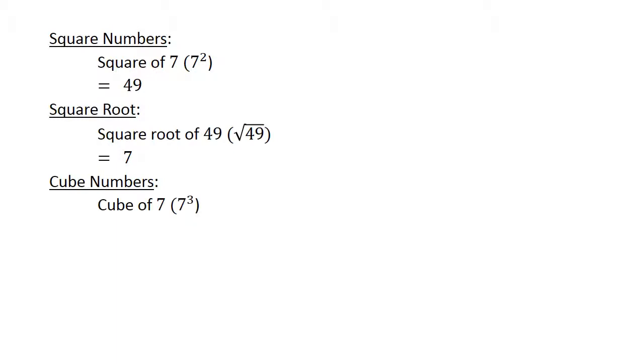Square of 7 equals 49. Square root of 49 equals 7. The cube of 7 equals 343. Cube root of 343 equals 7.